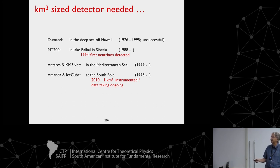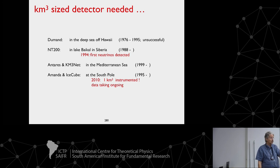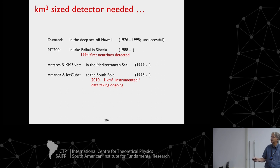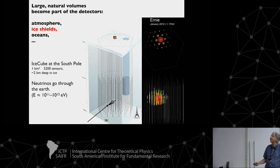AMANDA grew into IceCube. By 2010, one cubic kilometer of Antarctic ice was instrumented, and data taking has been ongoing since. IceCube consists of 86 strings of about 60 optical modules each. Deep down, where all light from above and cosmic rays are absorbed, is the sensitive dark volume. The strings hold optical modules spaced like the height of the Eiffel Tower across the cubic kilometer.